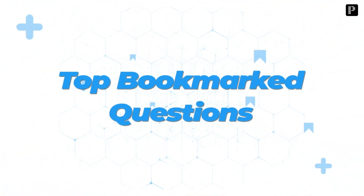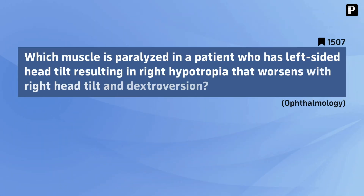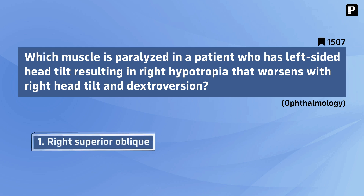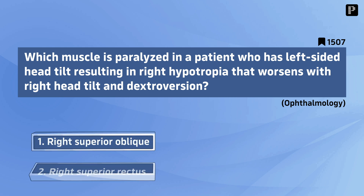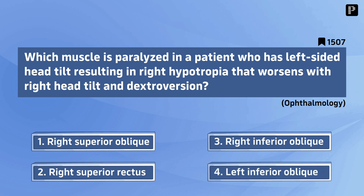Top bookmarked questions. Question 1: Which muscle is paralyzed in a patient who has left-sided head tilt resulting in right hypertropia that worsens with right head tilt and dextroversion? Your options are: right superior oblique, right superior rectus, right inferior oblique, left inferior oblique. And the correct answer is right superior rectus.